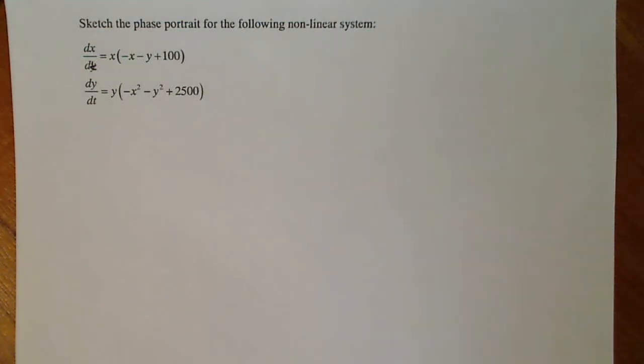In the first video, we found all the nullclines of the equilibrium solutions and all the directions of our vectors on the nullclines. And now we're going to classify each of the equilibrium points to see if it matches what my guess was in the previous video.